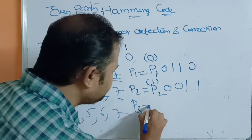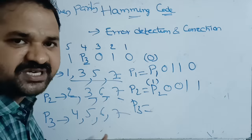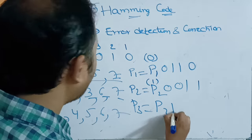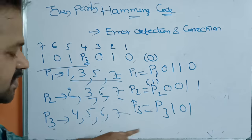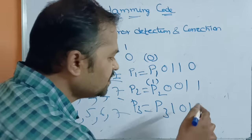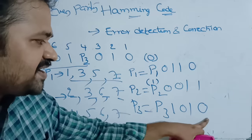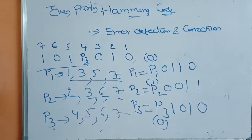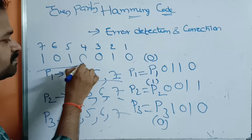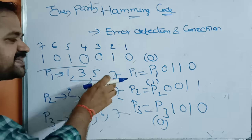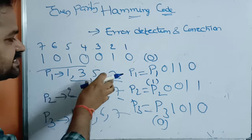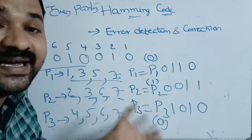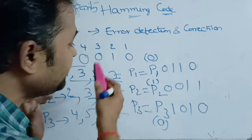Now let us calculate P3 using positions 4, 5, 6, 7. At position 4 we have P3; at position 5 we have 1; at position 6 we have 0; at position 7 we have 1. The number of 1s is already even, so P3 = 0. The sender now sends this 7-bit message — the 4 data bits plus the 3 parity bits — to the receiver.